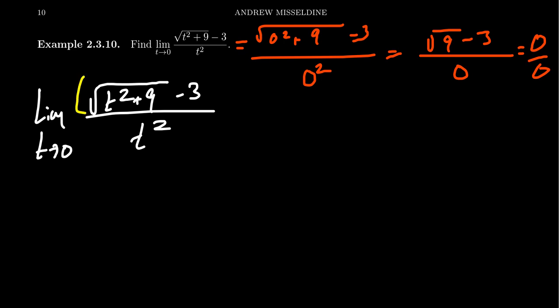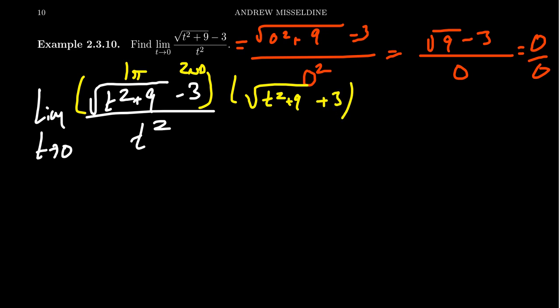To rationalize the numerator, you take this expression with two terms — the first term is the square root of t squared plus nine, and the second term is negative three. You switch the sign to get the conjugate: the square root of t squared plus nine plus three. Multiply the top of the fraction by that, and to keep the proportion, multiply the denominator by it as well.